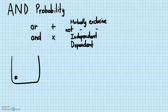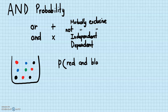Let's bring back the marbles. Inside this bag are some marbles. What is the probability of picking a red marble AND a black marble? There are going to be two cases: independent and dependent. Another way to say these — independent means with replacement, and dependent means without replacement.